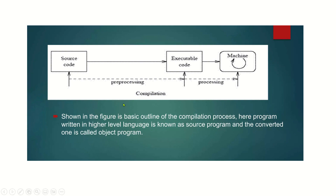This general figure is a basic outline of the compilation process. The program written in high level language is known as source program or source code. The converted one is called the object program. After compilation, once the target code is ready, the compiler is no longer required, because the compiler converts the source code into executable code in one go.